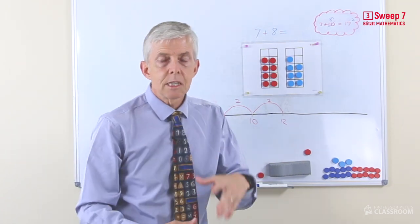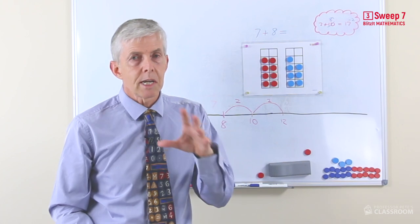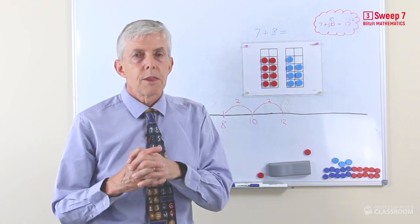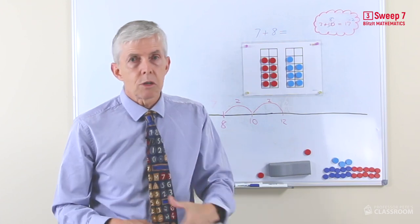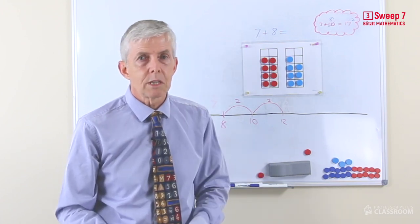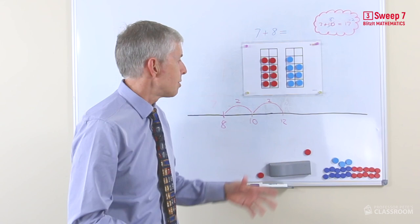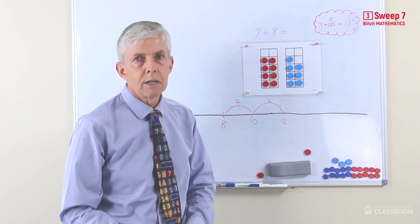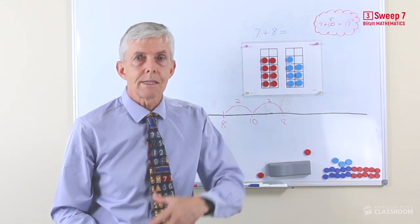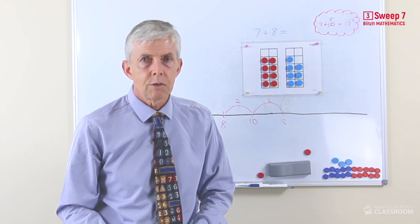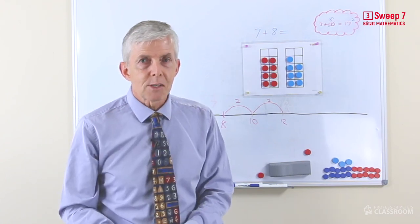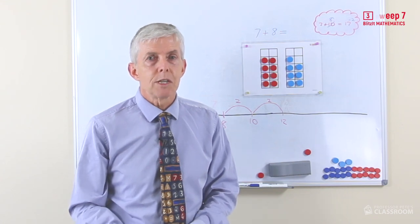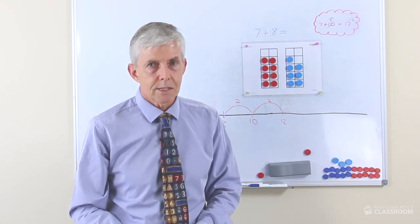So again this works in both directions, something plus 8 or 8 plus something else. Think of adding 10, compensate by 2, so take 2 away from the answer you'd get if you had 10, that sort of thing, or use the open number line starting with a hop of 2 to get to 10 and then whatever's left over is above the 10. That's it for this one, I'll see you in the last sweep for this module, sweep number 8.